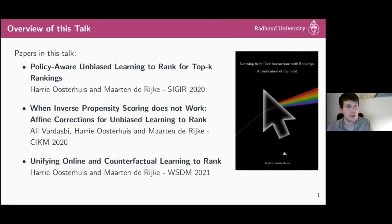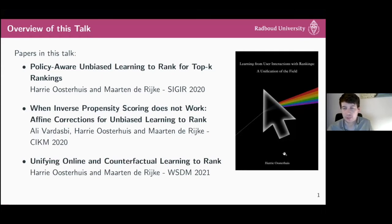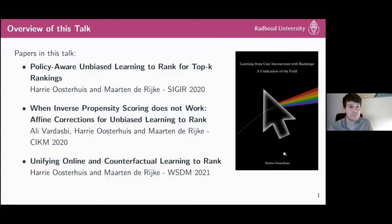In particular, I want to talk about three papers where there is a theme throughout the work. Two of them are from my thesis. These are: 'Policy-Aware Unbiased Learning to Rank for Top-K Rankings,' done together with Professor Martha de Rijke; 'When Inverse Propensity Scoring Does Not Work: Affine Corrections for Unbiased Learning to Rank,' done with Ali Vardasbi and Martha de Rijke; and 'Unifying Online and Counterfactual Learning to Rank,' also with Martha. I chose these three papers because they build upon each other — the lessons from the first paper come back in the last paper, and the same goes for the second.